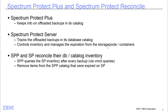Since both Spectrum Protect Plus and the Spectrum Protect Server track which images are sent to the Spectrum Protect Server, and since the Spectrum Protect Server controls inventory and manages expiration from its storage pools and containers, the two servers will reconcile with each other to keep their catalog inventories up to date. After each Spectrum Protect Plus backup, it uses VM CLI queries to check the Spectrum Protect inventory, then removes from its catalog any images that were expired off from Spectrum Protect.